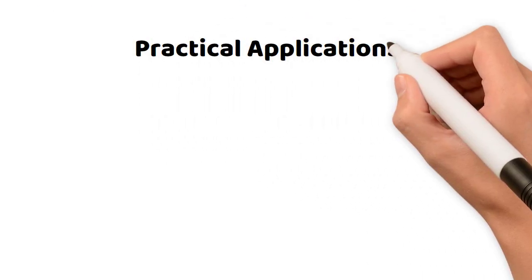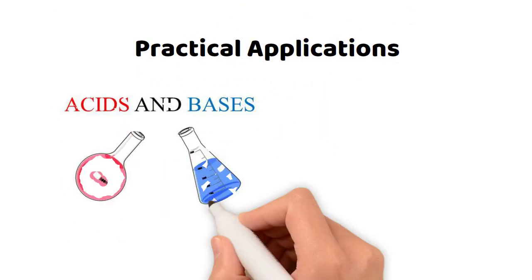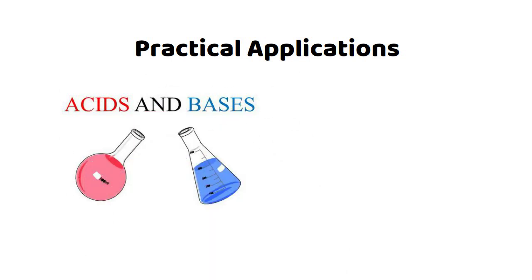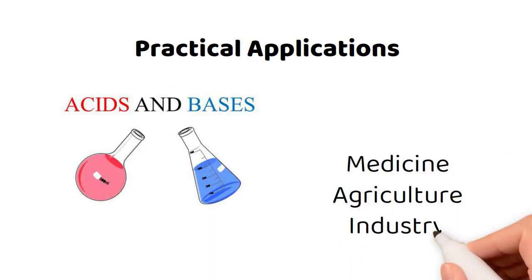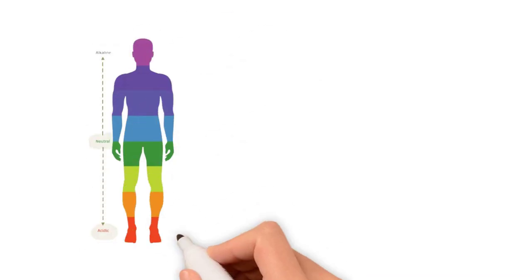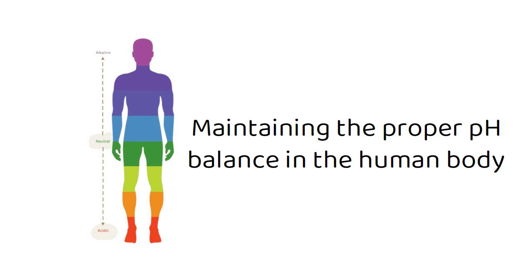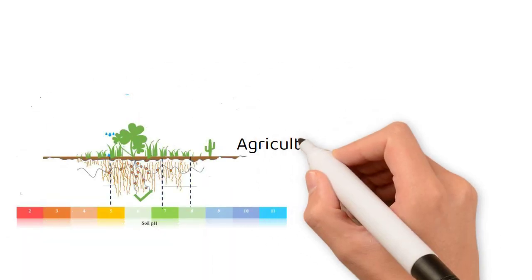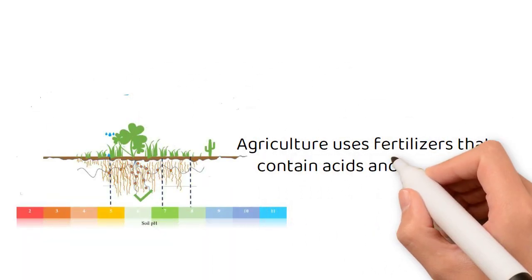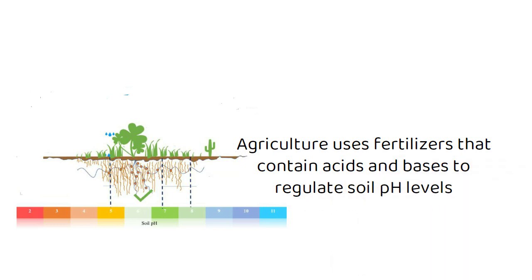Practical applications. Acids and bases have practical applications in many fields, including medicine, agriculture, and industry. For example, pH levels are critical in maintaining the proper pH balance in the human body, and agriculture uses fertilizers that contain acids and bases to regulate soil pH levels.